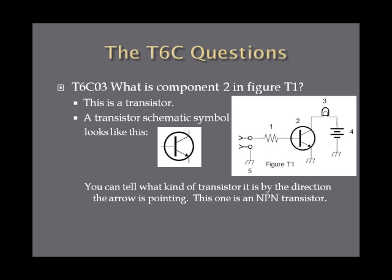What is component two in figure T1? Component two is a transistor — that is the schematic symbol for a transistor, which we talked about in the last lesson. What's neat about transistor schematics is you can tell what kind of transistor it is by which direction the arrow is pointing. This one is an NPN transistor, which means it has two layers of N-type semiconductor material sandwiching a layer of P-type semiconductor material. Just look at that symbol and remember it's a transistor.